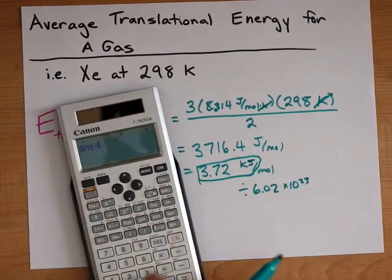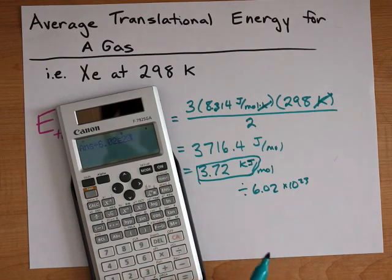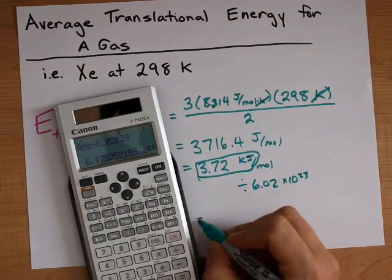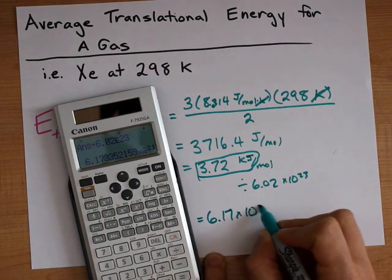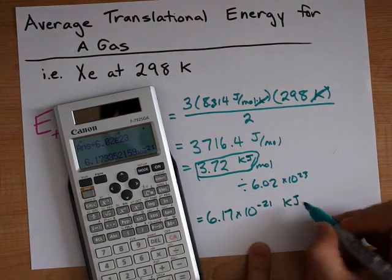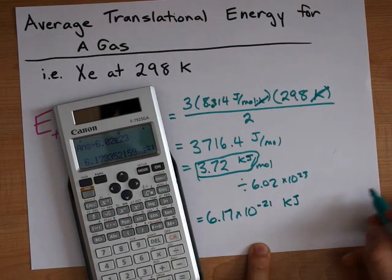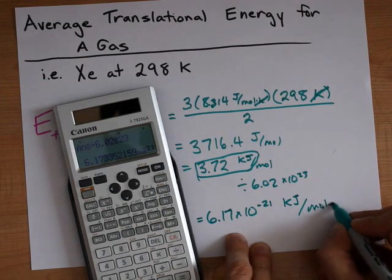I'm going to do that here for you. I'm going to divide that by 6.02 times 10 to the 23 and I end up with 6.17 times 10 to the negative 21. That's still in kilojoules because that's how I converted it per molecule.